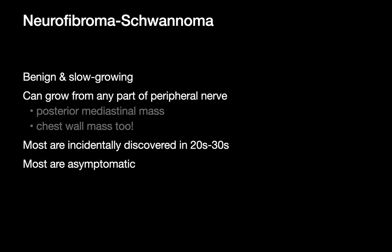We're going to talk about neurofibromas and schwannomas together because they share a lot of characteristics. Both are slow growing and can grow from any part of the peripheral nerve. The ones near the root become posterior mediastinal masses when large enough, whereas the ones more peripheral, next to the rib, may evolve into a chest wall mass instead. Neurofibromas and schwannomas are usually asymptomatic and tend to be incidentally discovered in early adulthood.